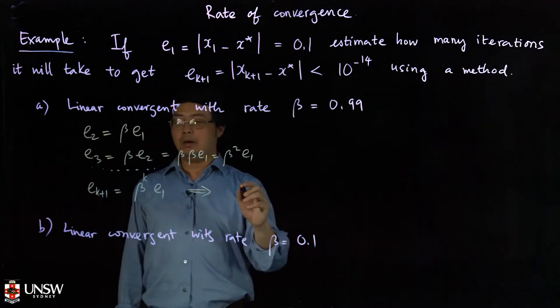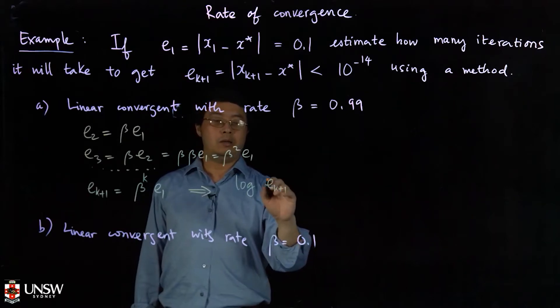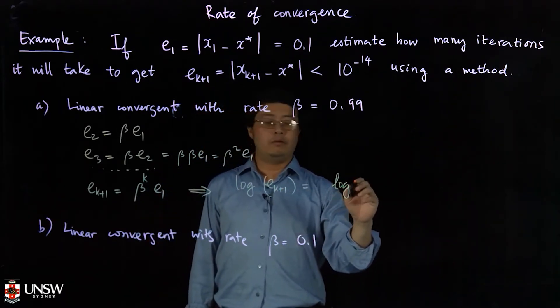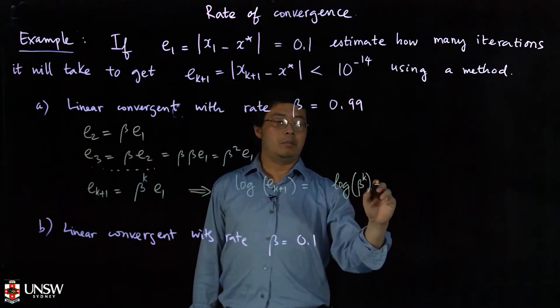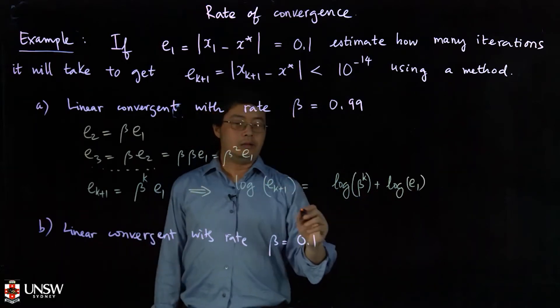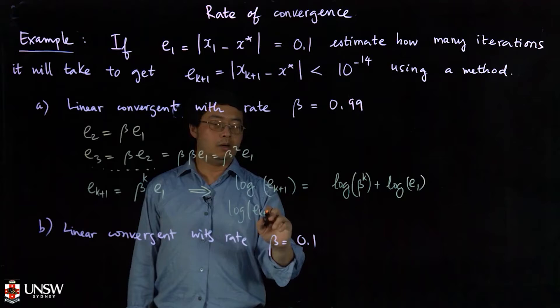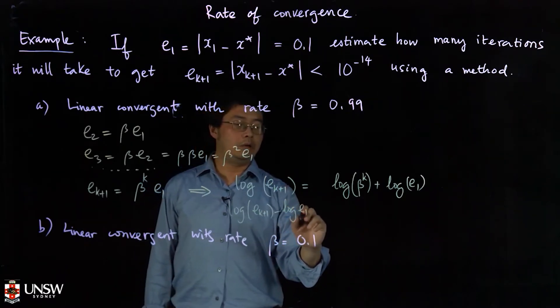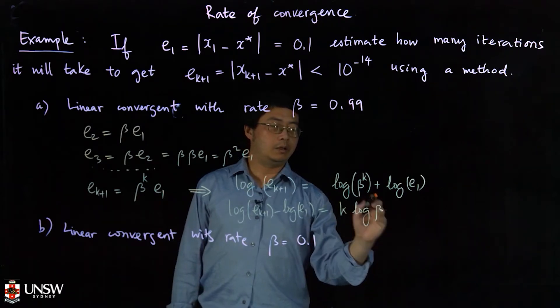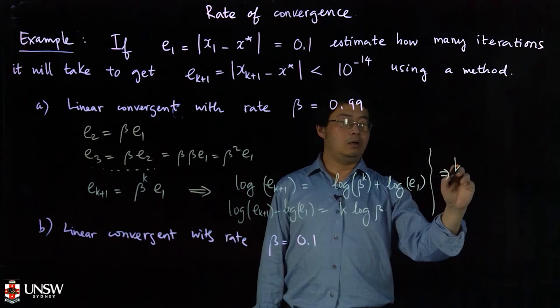Suppose I take logarithm. Take logarithm of e_{k+1}, then I have log(β^k * e1). So I have log(e_{k+1}) = k*log(β) + log(e1), which means log(e_{k+1}) - log(e1) = k*log(β). From here I have k will equal [log(e_{k+1}) - log(e1)] / log(β).